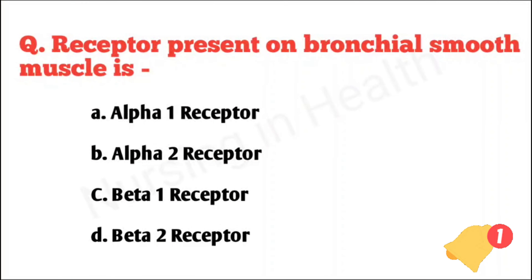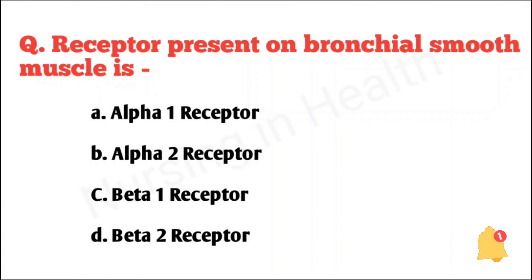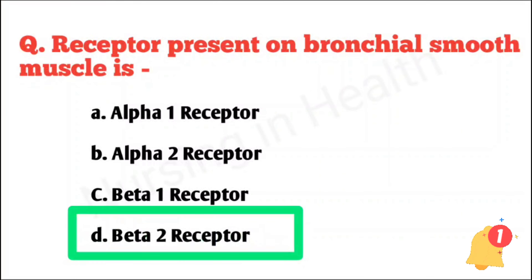Receptor present on bronchial smooth muscle is: alpha-1 receptor, alpha-2 receptor, beta-1 receptor, or beta-2 receptor. Right answer option D: beta-2 receptor.